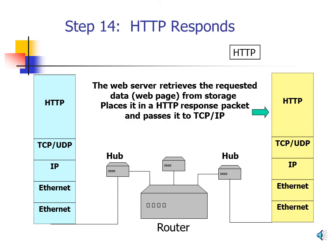Step 14: HTTP Responds. A request has been made to the web server for its home page. The web server retrieves the home page, which is formatted in HTML. It takes the HTML plus any graphics and puts them in an HTTP response packet, then hands that HTTP packet to TCP for continued processing.